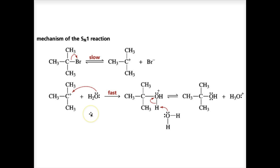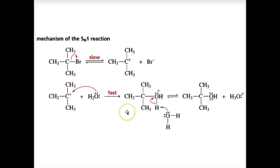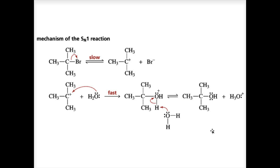In the SN1 reaction, the leaving group departs before the nucleophile approaches. Bromine leaves and the carbon-halogen bond breaks with the halogen retaining the previously shared pair of electrons, forming a carbocation intermediate. In the second step, the nucleophile reacts rapidly with the carbocation to form a protonated alcohol. At pH 7, the alcohol exists predominantly in its neutral form. Since the rate depends only on the concentration of the alkyl halide, the first step must be slow and rate-determining, so the nucleophile is not involved in the rate-determining step.